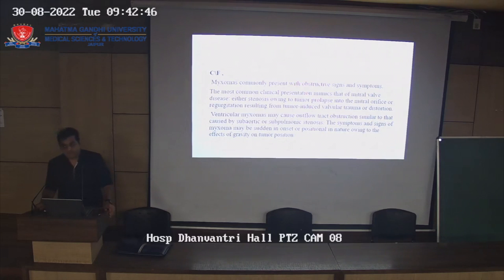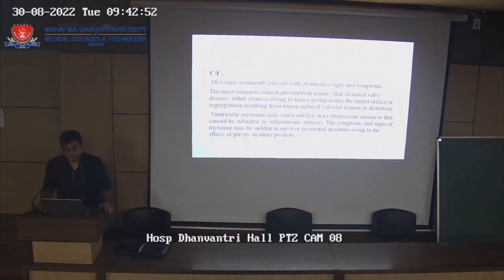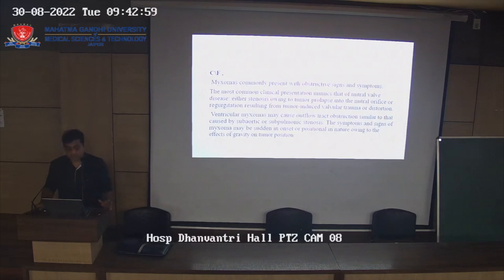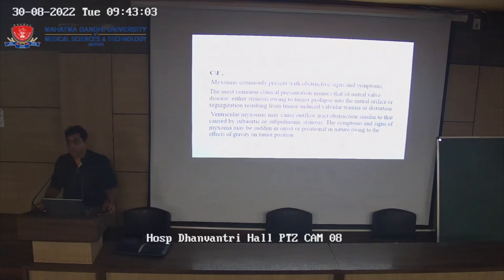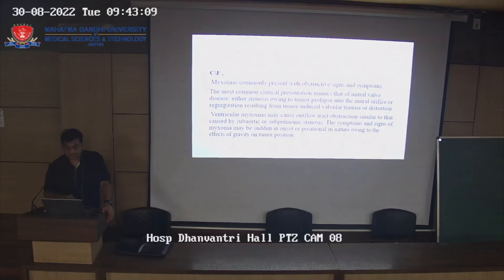Usually there is a stenotic, obstructive type of lesion. Ventricular myxomas occurring in familial type cause obstruction similar to sub-aortic or sub-pulmonary obstruction. The symptoms of cardiac myxomas may be sudden in onset and positional — the tube and gravity cause changes in the position of the tumor — which is a typical sign of a tumor rather than involvement of the mitral valve itself.